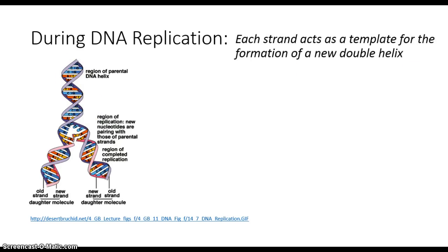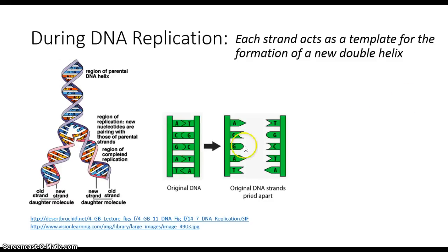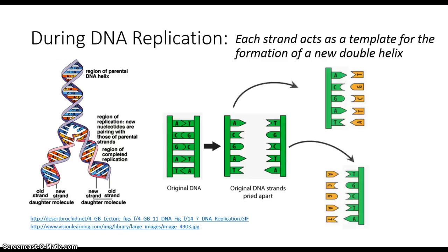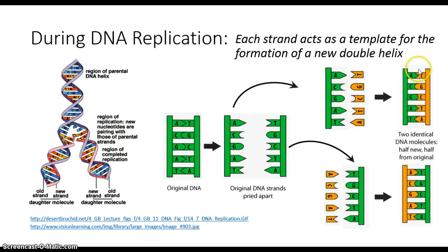So, each strand is acting as a template for the formation of a new complementary double helix. This is the original DNA, you pry apart the two strands, and then just match up the complementary bases for each of the strands, therefore creating two new molecules which are half old and half new. You can see that these bases here are exactly the same as the original one that you started with, due to the rule of complementary base pairing.